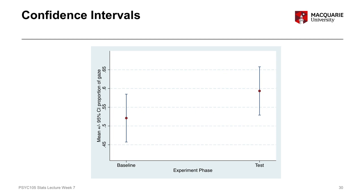The reason CI width matters for predicting where the population parameter will be is that the more variation there is in our sample, the more variation there probably is in the population. Similarly, the bigger our sample size, the more likely it is to be representative of the population; the smaller the sample size, the less likely. That's why the confidence interval widths change depending on both the variability and the sample size. To recap, the confidence intervals give us a sense of where we're 95% certain that the population mean score is going to be somewhere between these two limits.